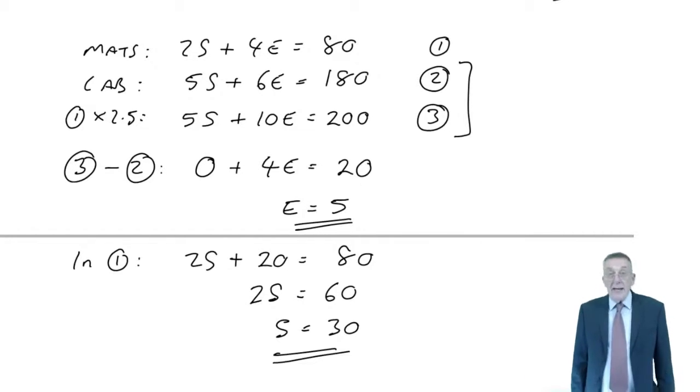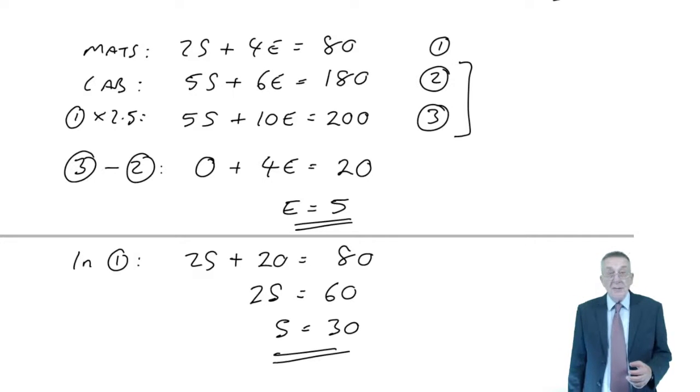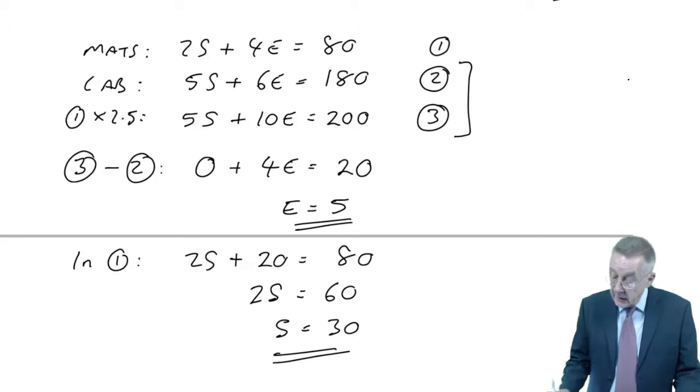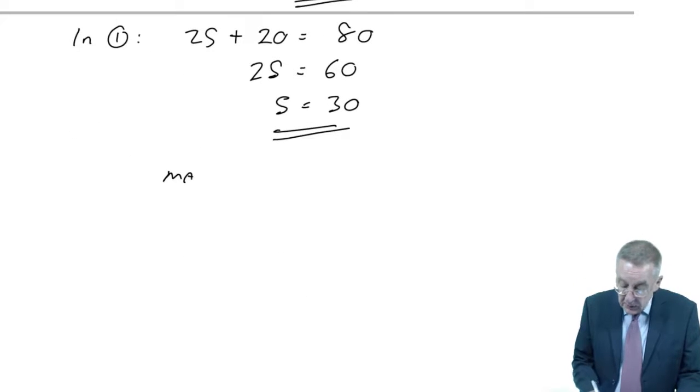And we're not quite there yet, because of course, although we now know our optimum production plan will produce 30 standards and 5 executives. The question did also want to know the maximum contribution, but that's now easy.